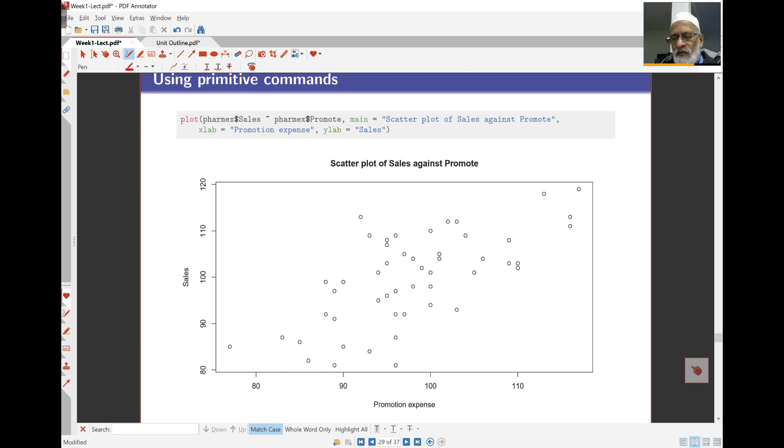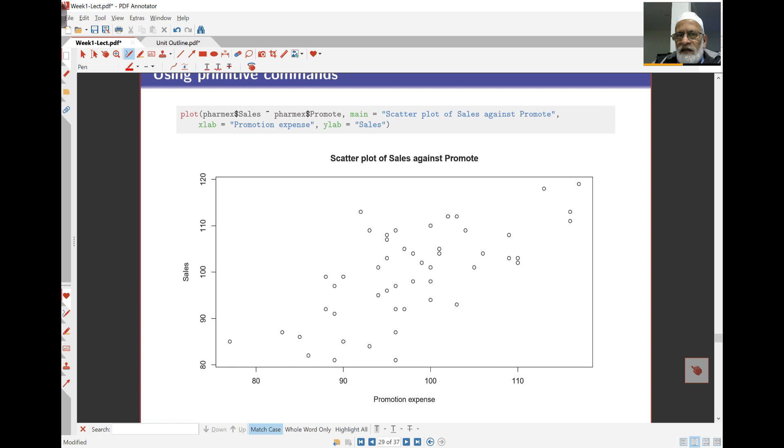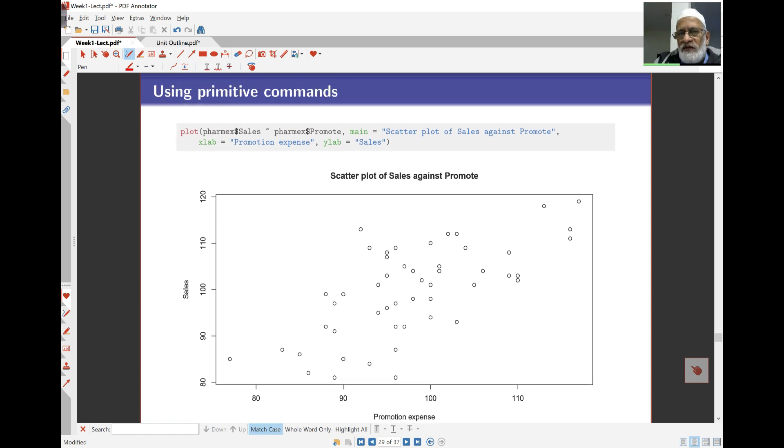So we plot this. I plot over here the promotion expenses against the sales. I can use the primitive command, so the plot commands, the plot farmx dollar sales against farmx dollar promote. As we know, dollar is able to access the variables underneath my data file here or data object. And the main here is the main title, which is scatter plot of sales against promote, as you can see on top over here.